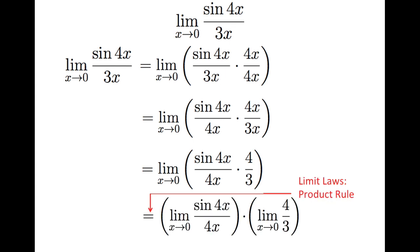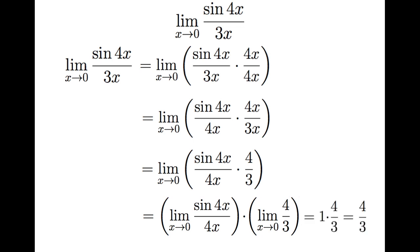I can use the product rule portion of the limit laws to say this equals the product of the limits of the two pieces: the limit of sine of 4x divided by 4x as x goes to 0, times the limit of 4 thirds as x goes to 0. Knowing that as x goes to 0, 4x also goes to 0, that first part reflects the template, so that limit is equal to 1. The limit of 4 thirds as x goes to 0 is 4 thirds, so the overall limit is 4 thirds.